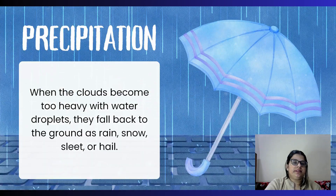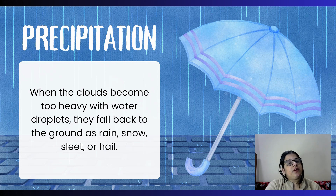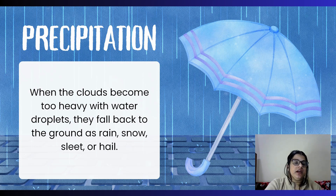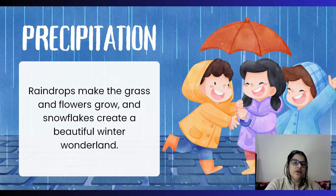Then there is precipitation. When the water in the sky becomes very heavy, the water droplets come back to the ground as rain, snow, sleet, or hail. Raindrops help grow grass and flowers.